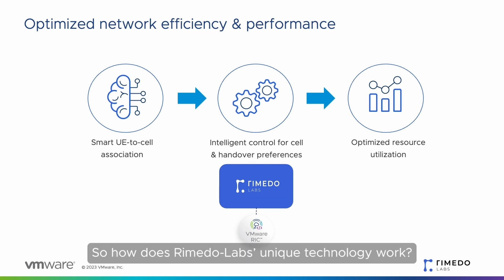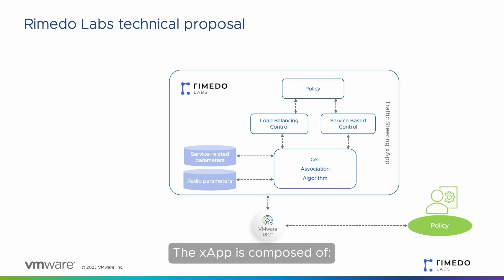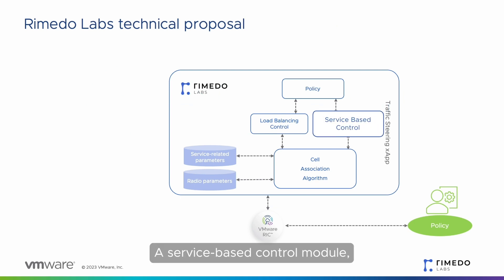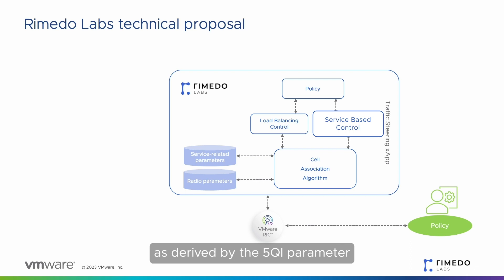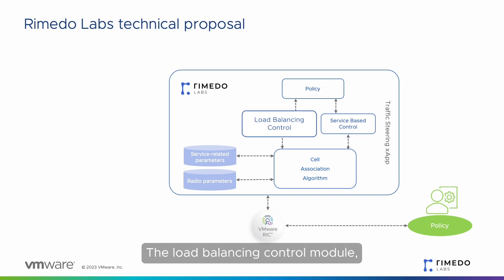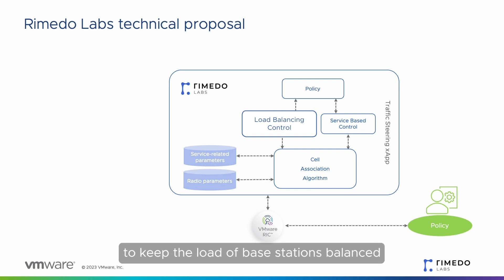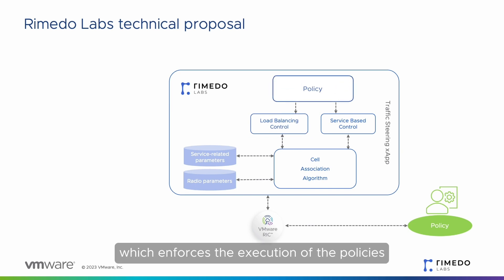So how does Remedo Labs' unique technology work? The X-App is composed of a service-based control module managing the policies that associate UEs with specific types of cells based on the services currently used, as derived by the 5QI parameter. The load balancing control module optimizes user association with cells to keep the load of base stations balanced. The policy module enforces the execution of the policies.